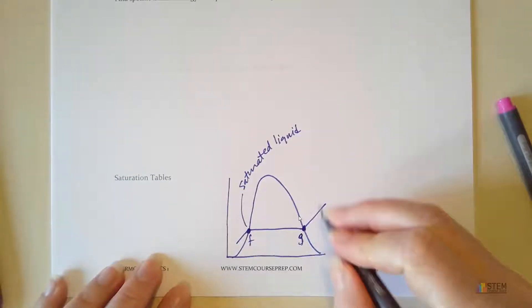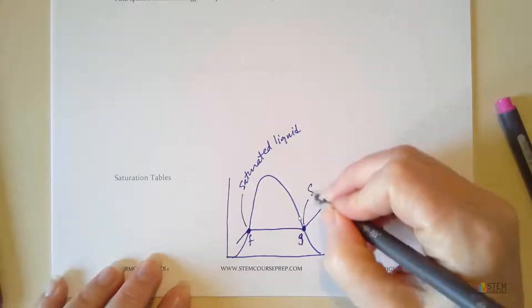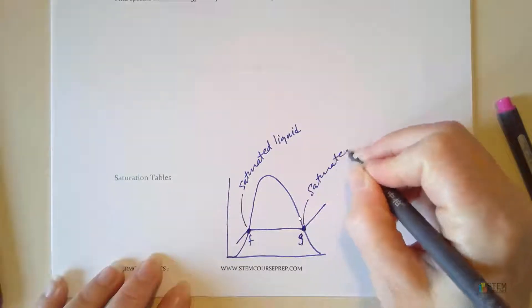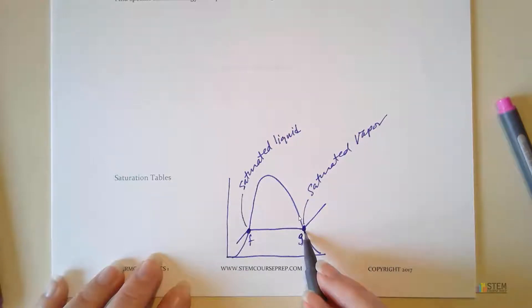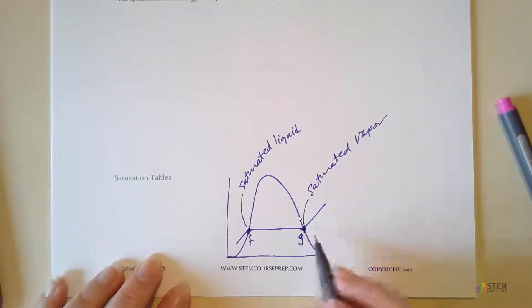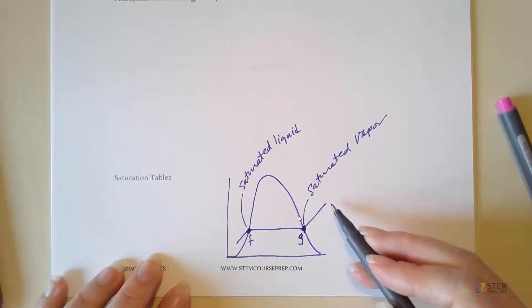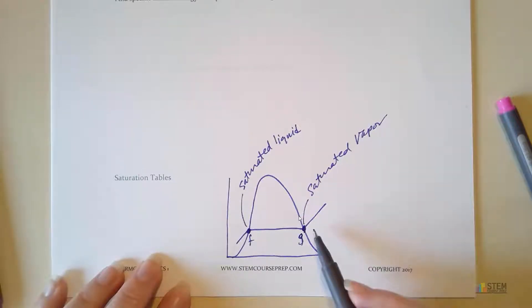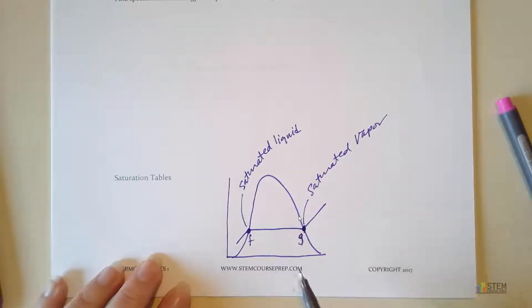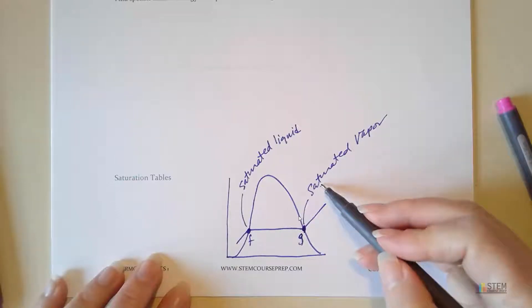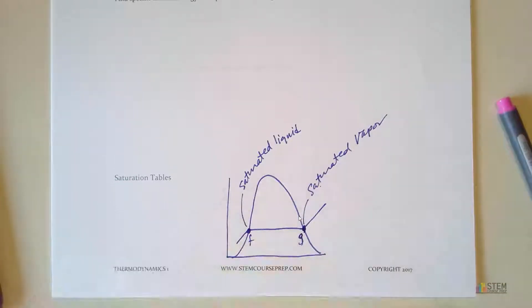Over here at G, we've got saturated vapor. So at this point, all of your liquid water will be gone and all you have is vapor. Now, if you continue to add heat, you're going to have a superheated vapor. If you were to reduce heat or cool things off, you're going to start condensation, so you're going to return back to liquid water. Remember, saturated is just indicating you are about to have some sort of phase change.